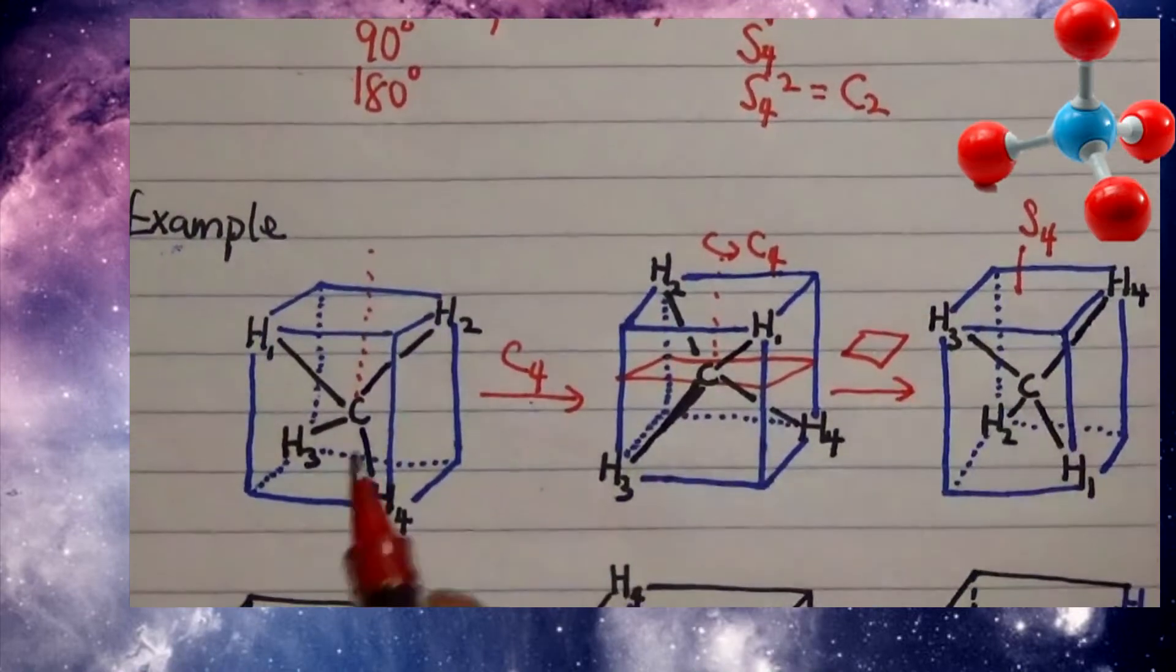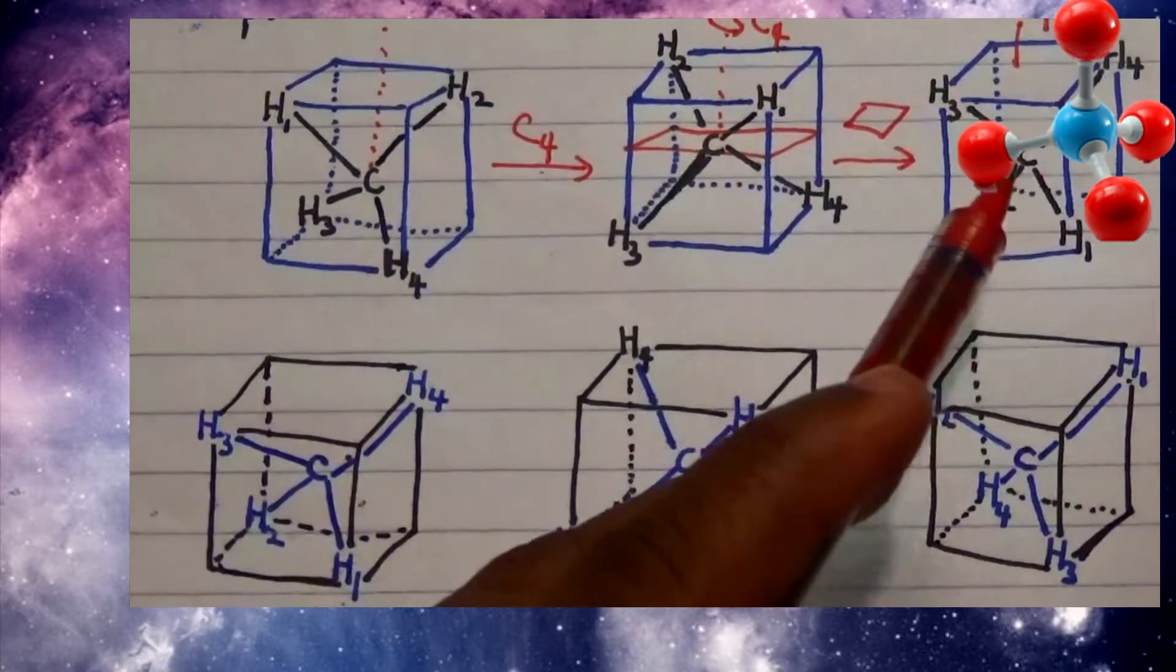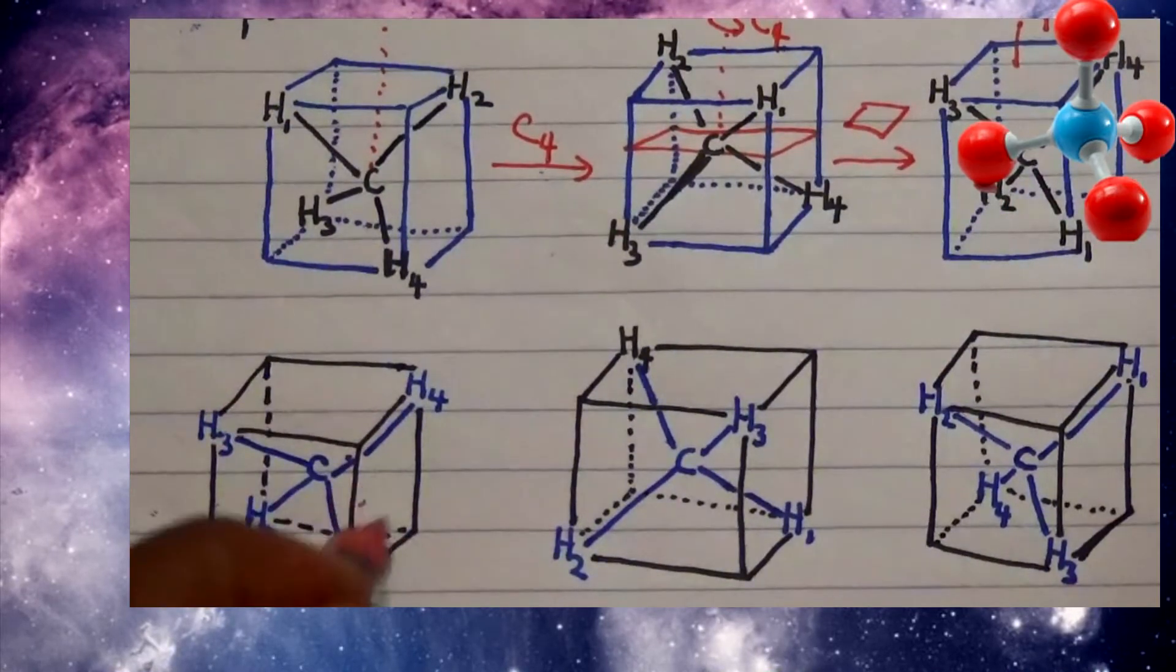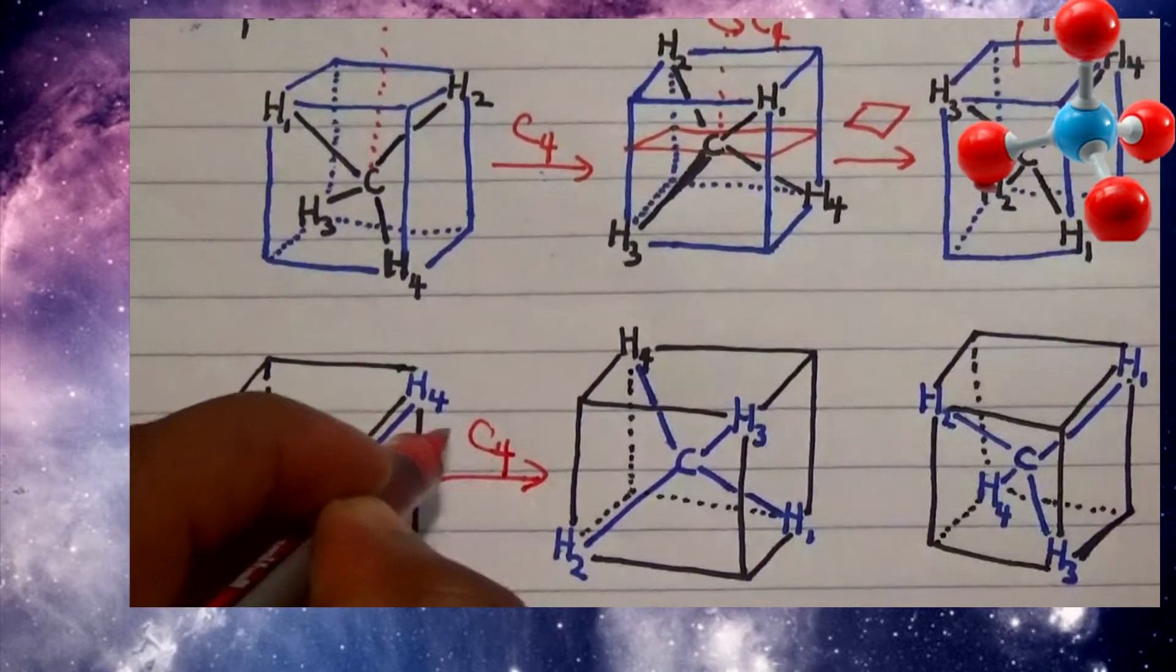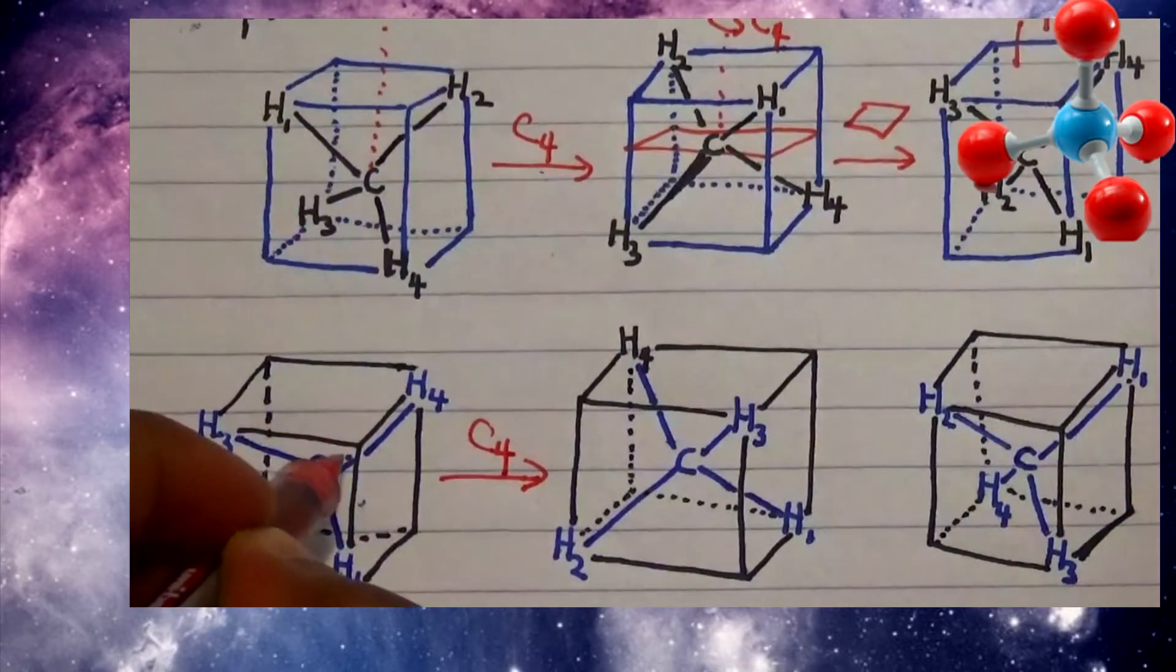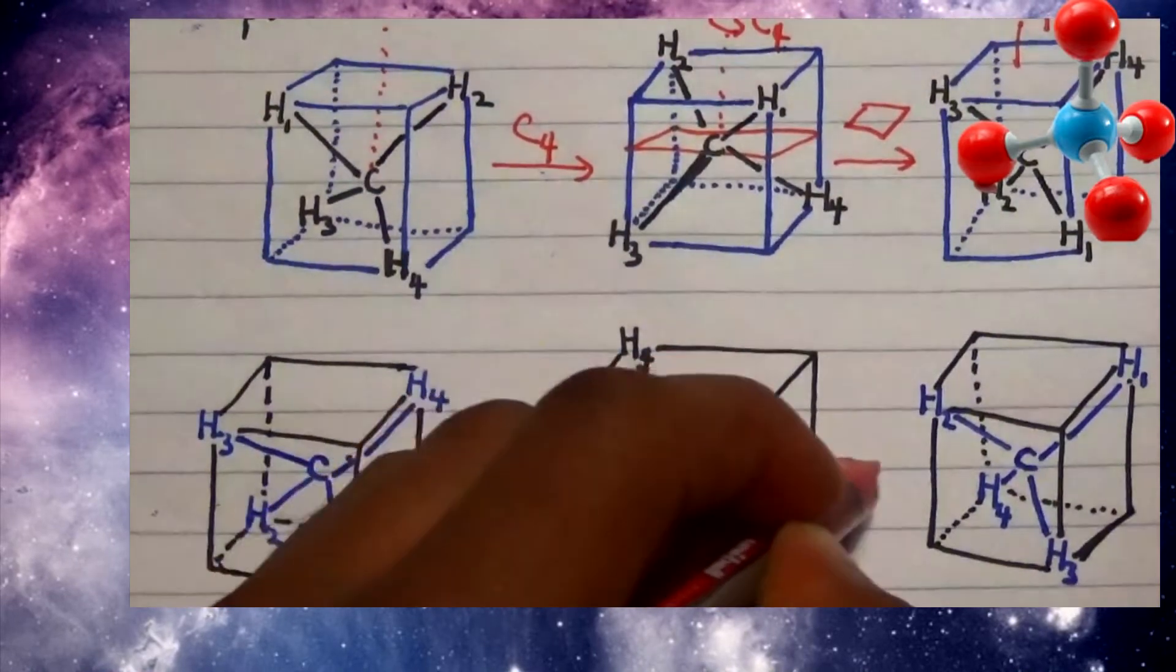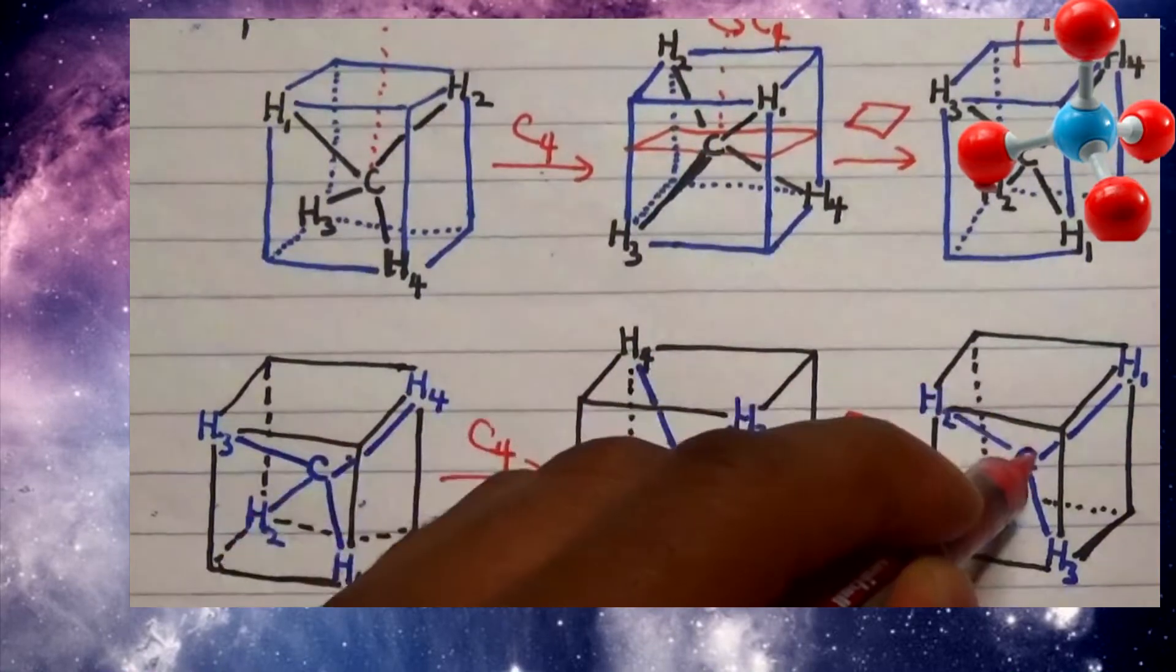Now this didn't end at all, because in this particular case now I'm actually bringing this back over here and then I apply 90 degrees rotation as well. So what is happening now is that a C4 rotation applied in here gives me this, and then a mirror plane is applied in here and I get this over there.